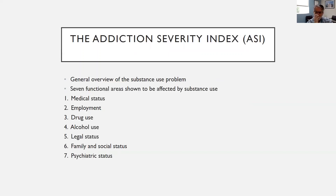There's something called the Addiction Severity Index. Tom McClellan developed this model and identified seven areas of function impacted by substance use: medical status, employment, drug use, alcohol use, legal status, family and social status, and psychiatric status. It gives you a general overview of the substance use problem.